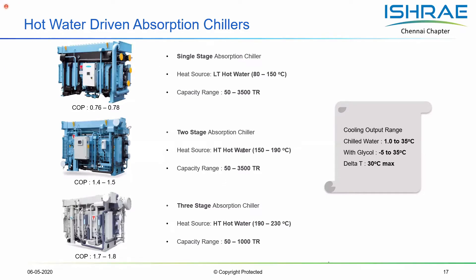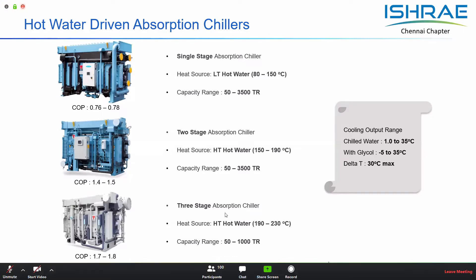Such technologies are gaining popularity as energy costs increase and there is continued focus on reducing carbon footprint and operational expenses. As a standard unit available in the market, a single-stage chiller is used for 80 degrees Celsius and above. For higher hot water temperatures of 150 degrees Celsius and above, you can go for either a two-stage or three-stage chiller. The chilled water generated is of the same order — down to 1 degree Celsius or minus 5 degree brine.